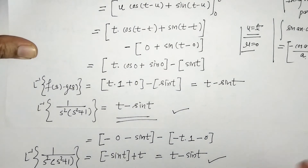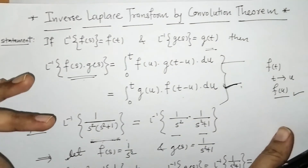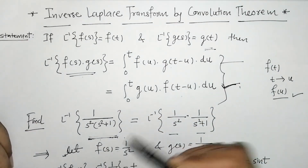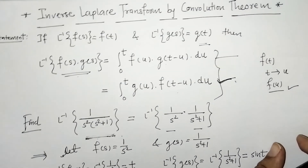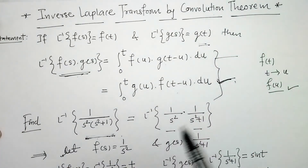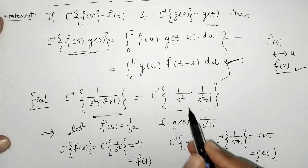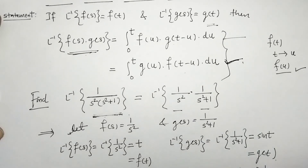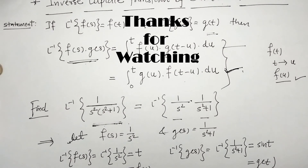So we got the same result: L⁻¹{1/(s²·(s² + 1))} = t - sin(t), confirming our earlier answer. We can apply both integral forms for finding the inverse Laplace transform as per our convenience. The key steps to remember: divide the given function into two parts whose inverses are known separately, then apply the convolution integral. That's it for now — see you in the next video, thank you, keep watching!